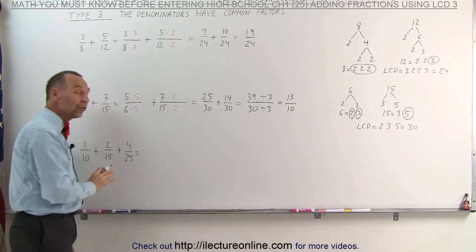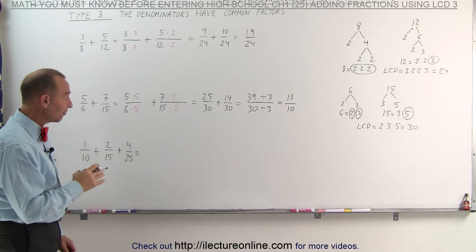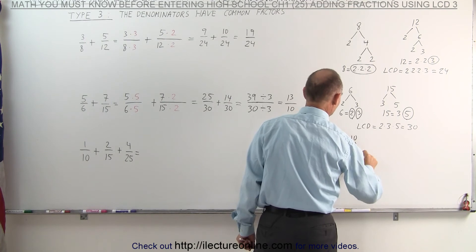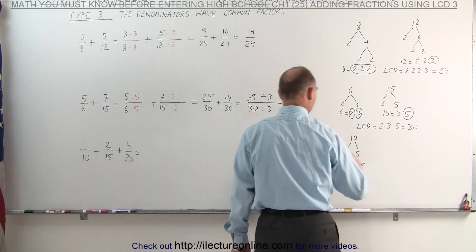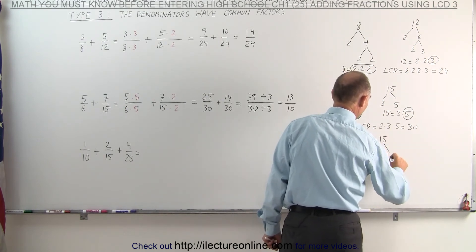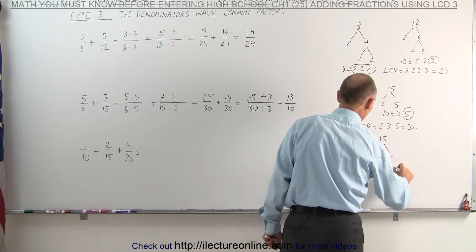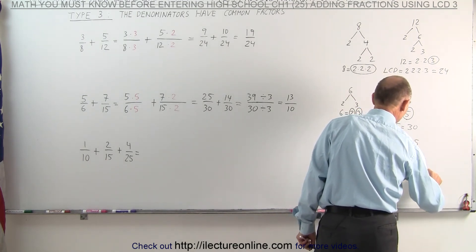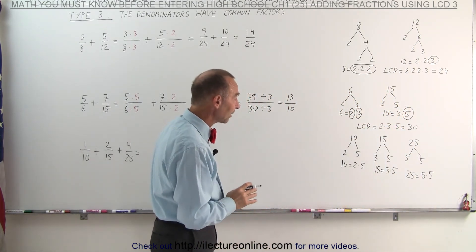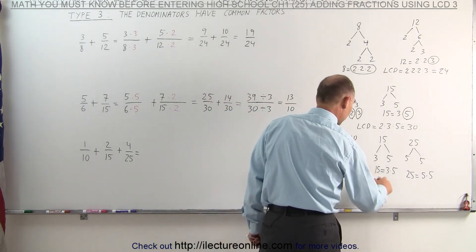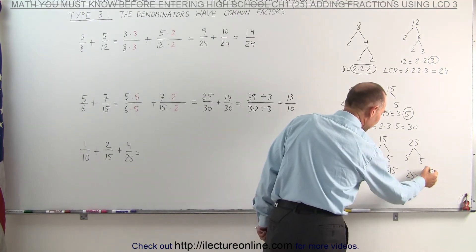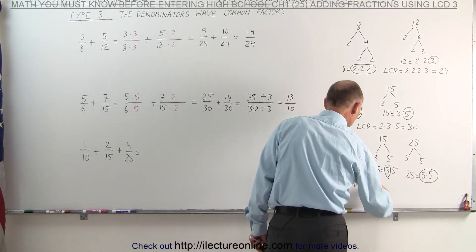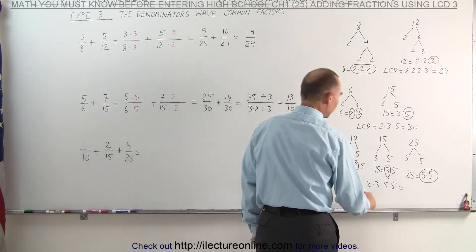On our next example, notice that the denominators again have common factors, so we write each denominator as a product of its prime factors. Starting with 10: that is 2 times 5. The next denominator, 15, is divisible by 3, which gives us 5, so 15 is 3 times 5. And 25 is divisible by 5, giving us 5, which means 25 is 5 times 5. Now let's circle the prime factors that occur the most: 2 occurs in 10, 3 occurs in 15, and 5 occurs twice in 25, so I circle those two. The LCD equals 2 times 3 times 5 times 5, which is 150.